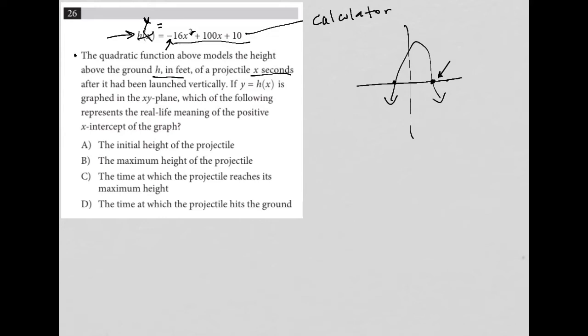Well, first of all, what is an x-intercept? An x-intercept is a value of x when y is equal to zero. So what would it mean if y, which again, y is equal to h(x). So what would it mean if the height is zero?